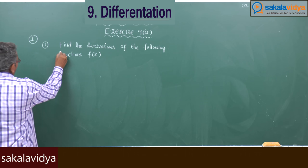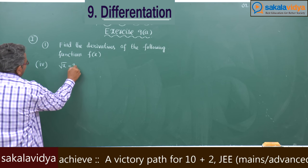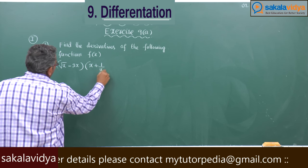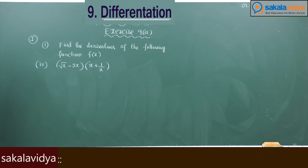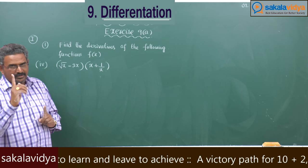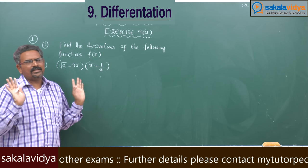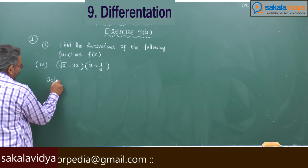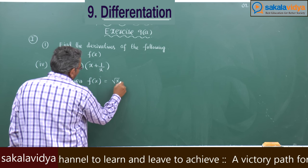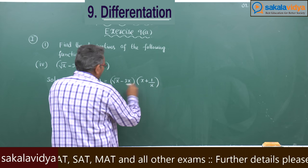Fourth problem: given f(x) is equal to (root x minus 3x)(x plus 1/x). Before attempting this problem, it is important to remember: the derivative of root x is 1 by 2 root x, and the derivative of 1/x is minus 1 by x². This is a product of two functions.